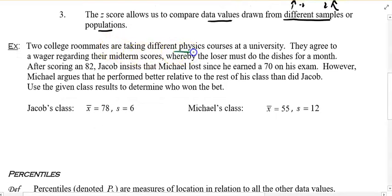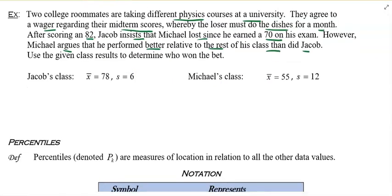Two college roommates are taking different physics classes at a university. They agree to a wager regarding their midterm scores, whereby the loser must do the dishes for a month. After scoring an 82, Jacob insists that Michael lost since he earned a 70 on his exam. However, Michael argues that he performed better relative to the rest of his class than Jacob did. Use the given class results to determine who won the bet. There are two options you could do. You could do this the long way, and you could do this the short way.